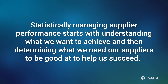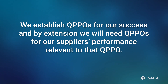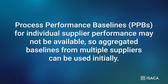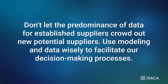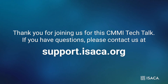The overall key to understanding SAM 4.1 is that statistically managing supplier performance starts with understanding what we want to achieve, then determining what we need our suppliers to be good at to help us succeed. We establish QPPOs for our success, and by extension, we will need QPPOs for our suppliers' performance relevant to that QPPO. Process Performance Baselines for individual supplier performance may not be available, so aggregated baselines from multiple suppliers can be used initially. Don't let the predominance of data for established suppliers crowd out new potential suppliers. Use modeling and data wisely to facilitate our decision making processes. Thank you for joining us for this CMMI Tech Talk. If you have questions, please contact us at support.isaca.org.